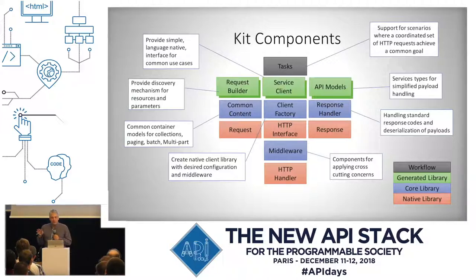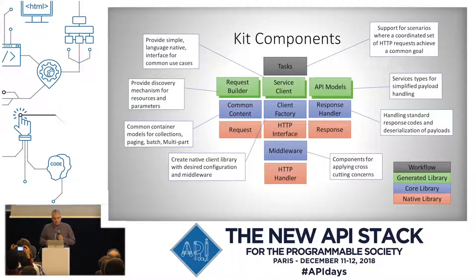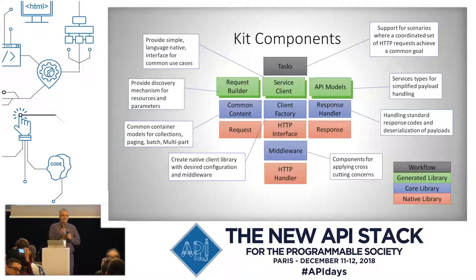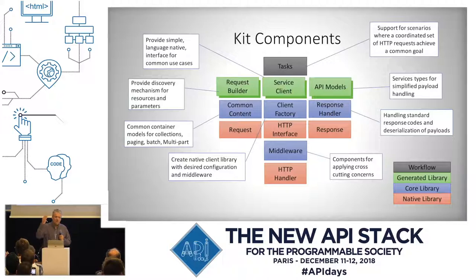At this point, we've not done any code gen — this is all core capabilities. But we can add more value with code gen. We can layer a clean, simple service client on top that helps developers discover the different capabilities available in the API, and we can auto-generate this from some kind of API description language. Code-generating models means nobody has to hand-code a bunch of classes for types they need within the domain. And request builders add a lot of value — building classes that create requests in a particular way designed for a particular API. I'm going to lay one more piece on top of that: a notion I call tasks — supporting scenarios where you have a coordinated set of HTTP requests to achieve some common goal.